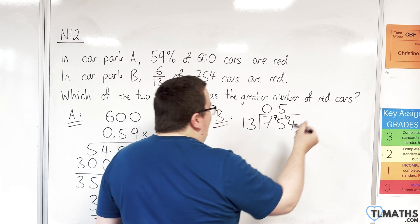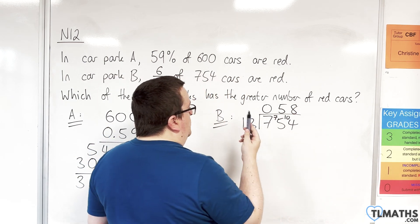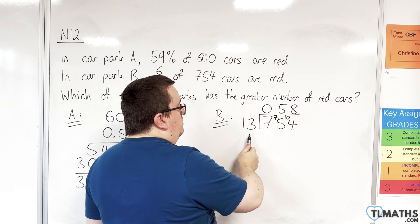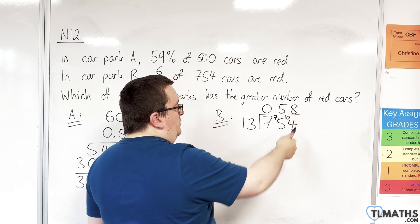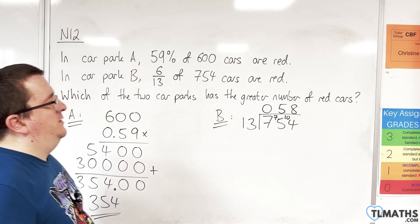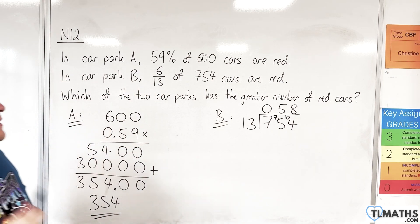Now, 13s into 104. What would that be? 8. 8 thirteens. 10 lots of 8 is 80, 3 eights are 24. 80 plus 24 is 104. So 58, that's what we're looking for. 1/13 is 58.